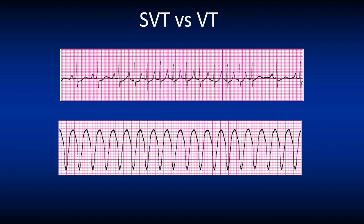Here we see the difference between an SVT on top and a VT. The SVT has a narrow QRS complex versus the VT which has a wide complex. Don't get confused between them as they have different treatment protocols.